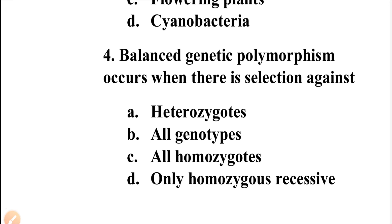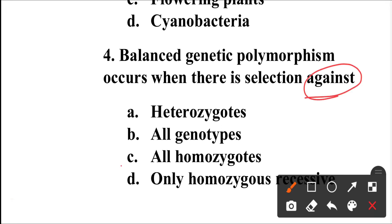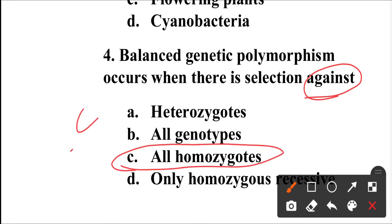Question number four: Balanced genetic polymorphism occurs when there is selection against heterozygotes, all genotypes, all homozygotes, or only homozygous recessives. Balanced genetic polymorphism occurs when carriers have advantages that allow a detrimental allele to persist in a population. This form of polymorphism often involves heterozygosity for an inherited illness which protects against an infectious illness, like sickle cell anaemia. The key word here is 'against' — it is selection against all homozygotes. Option C is the correct answer.